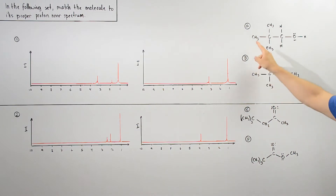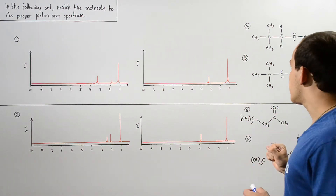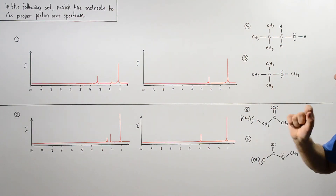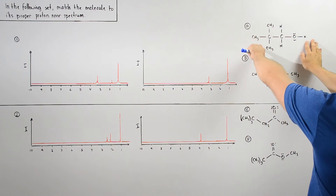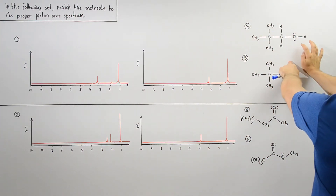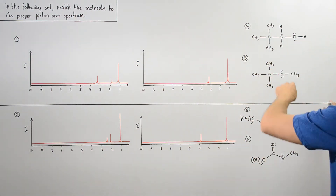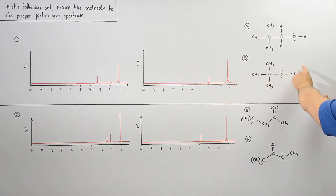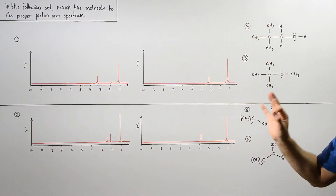In example one we have molecule A and molecule B. Molecule A contains three different types of H atoms. These H's are identical to one another but different from these H's, and these H's are identical to one another but different from this H. So basically we have one type of H, a second type of H, and a third type of H.